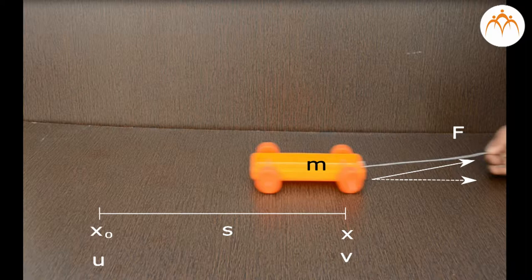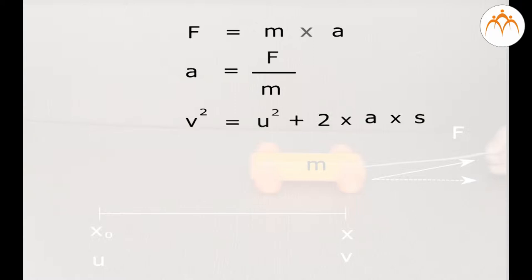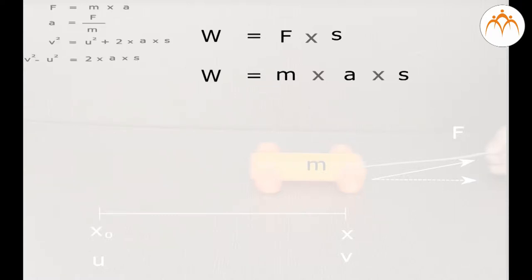This results in displacement s. Its acceleration a is equal to F over m. Constant force gives constant acceleration, so we can use the third equation of motion to relate the displacement s to the initial and final velocities. The total force is constant and parallel to the displacement, so the work is F times s.